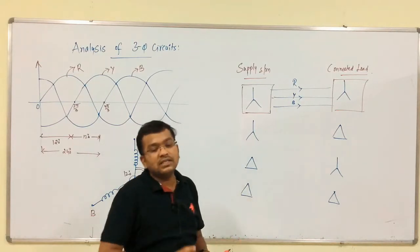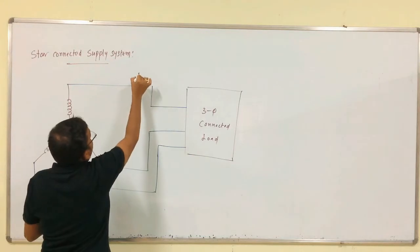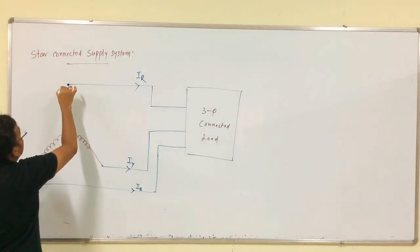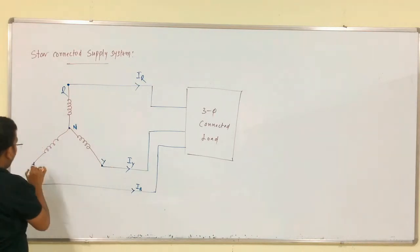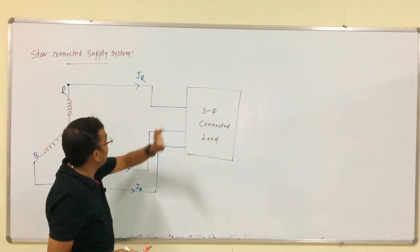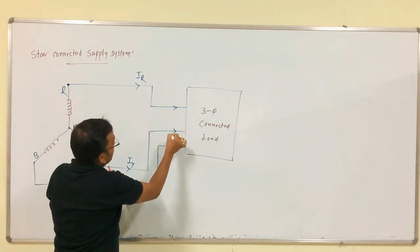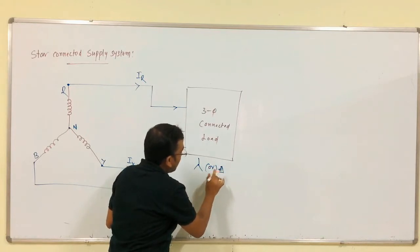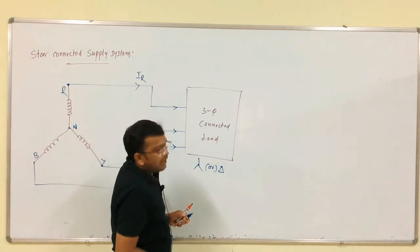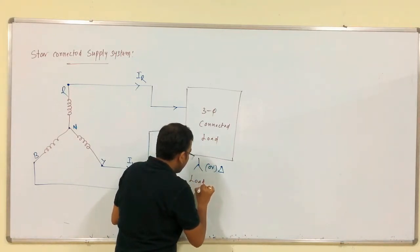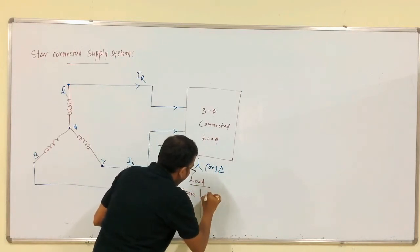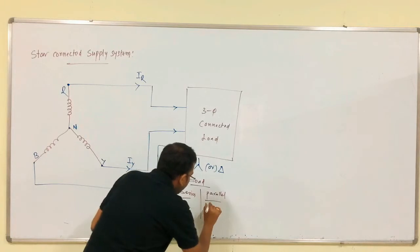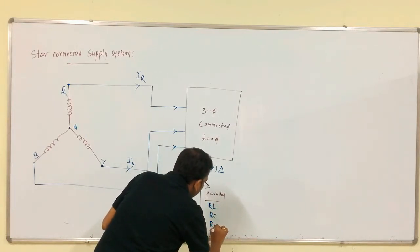First we have to discuss the star connected system. This is the current IR, this is the current IY, this is the current IB. This is phase R, this is neutral point, and this is Y and this is B. The current through these branches is IR, IY, IB. Here we have three-phase connected load, whether it is star or delta.